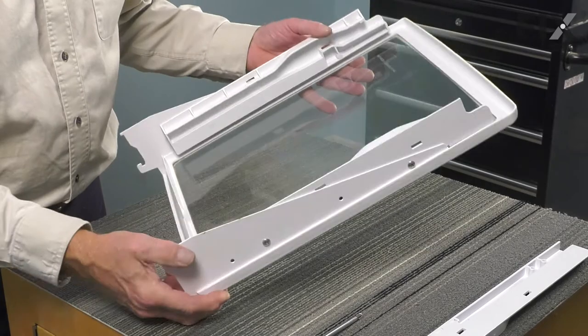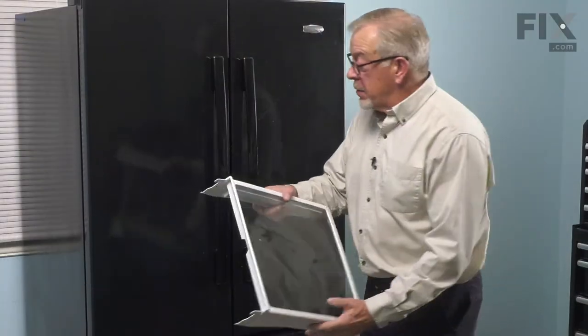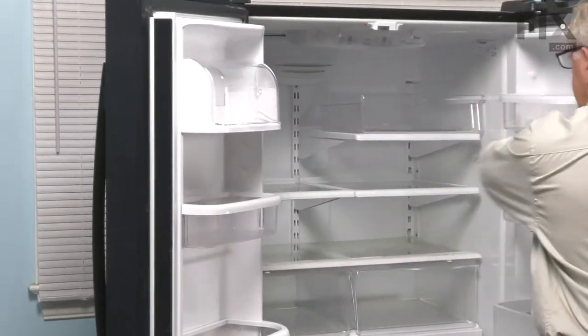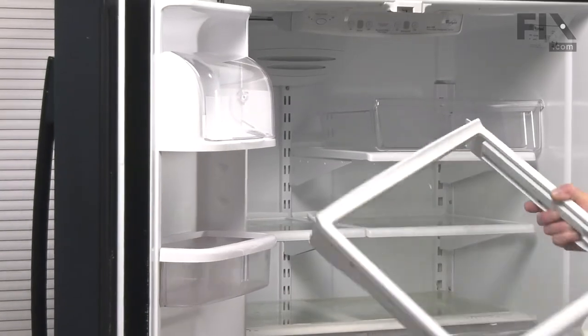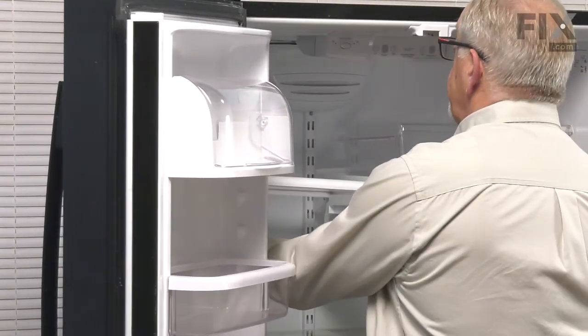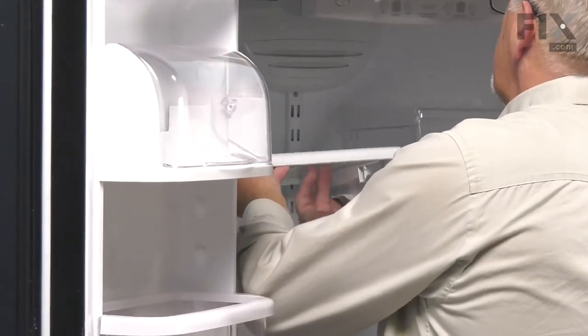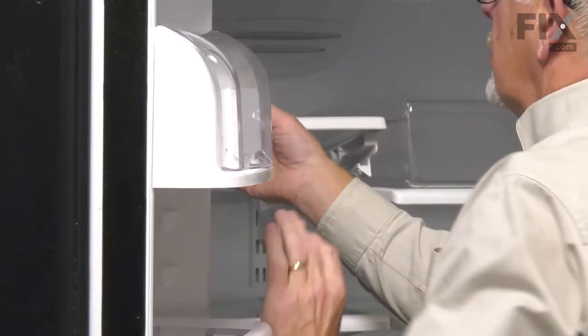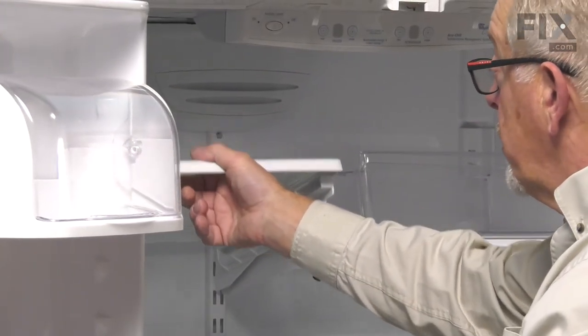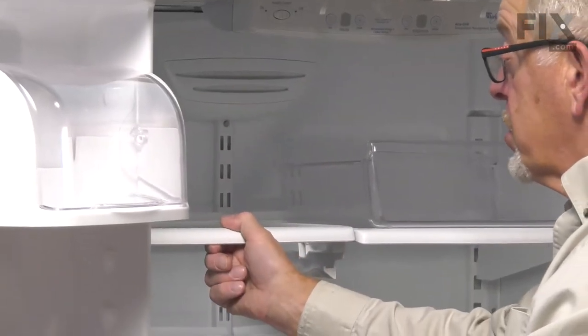Now, we can take that whole shelf assembly and put it back into the refrigerator. We're going to position that shelf in the same spot that we removed it. We'll tilt the front of it up. Make sure we insert those hooks at the back firmly under the mounting brackets. Lower the shelf down, make sure it's locked in place.